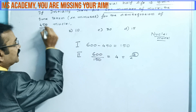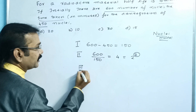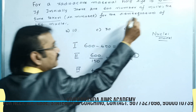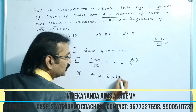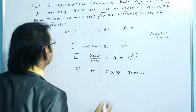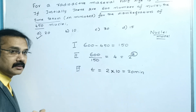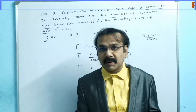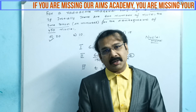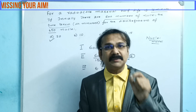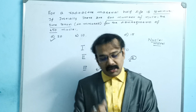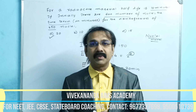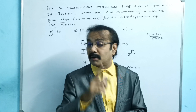Now we have to find the time. To find the time taken, take this magical number — which is the power, 2 — and multiply it by the half-life. The half-life is 10 minutes. So 2 multiplied by 10 gives us 20 minutes. We have solved this in 3 steps without using any formula and without using any concept. The answer is option A: 20 minutes.